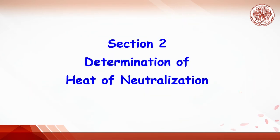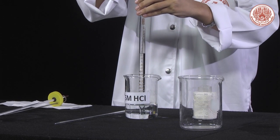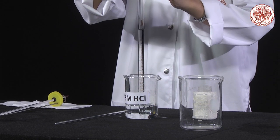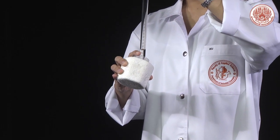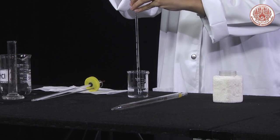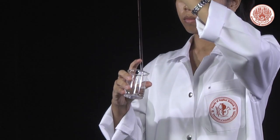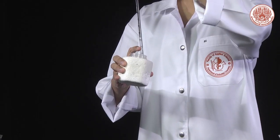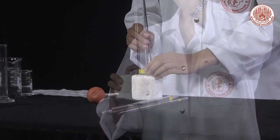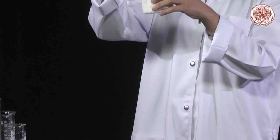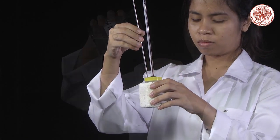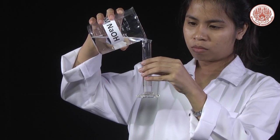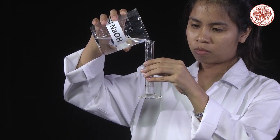Section 2 — Determination of heat of neutralization. Pipette 24 ml of 5-molar hydrochloric acid and transfer to the calorimeter. Next, pipette 1 ml of distilled water and transfer to the calorimeter. Stir, then record the temperature of the acid solution in the calorimeter. Get 25 ml of sodium hydroxide using a graduated cylinder.